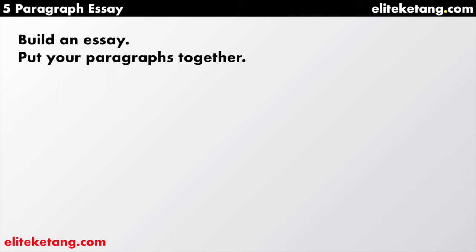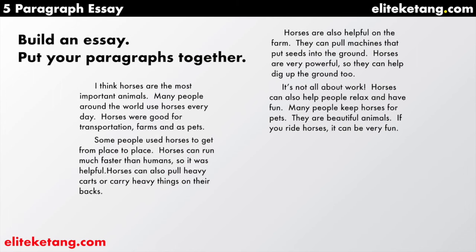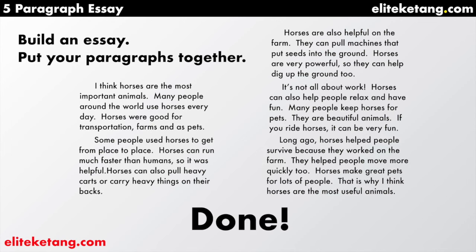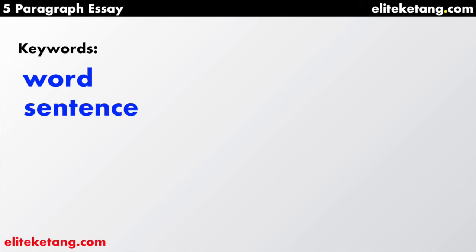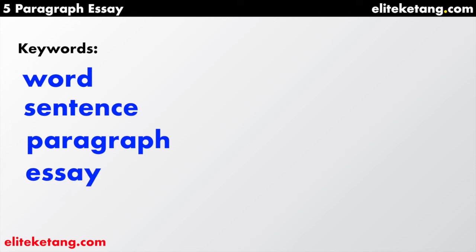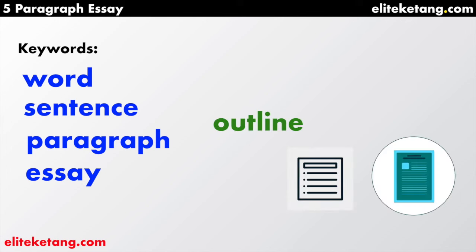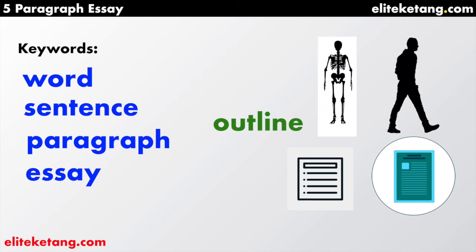Now put the paragraphs together and build an essay — paragraphs one, two, three, four, five — and you are done. That is a lot of writing. The outline helped you do it and you built paragraphs. Let's wrap up. The key words from this video: a word can build to a sentence, a sentence can build to a paragraph, and paragraphs can build up to an essay. We also used an outline, and the outline for your essay is like the bones of a person — they're on the inside and you can build up off of it. Thanks for watching, guys. That's all, and good luck with your essay.